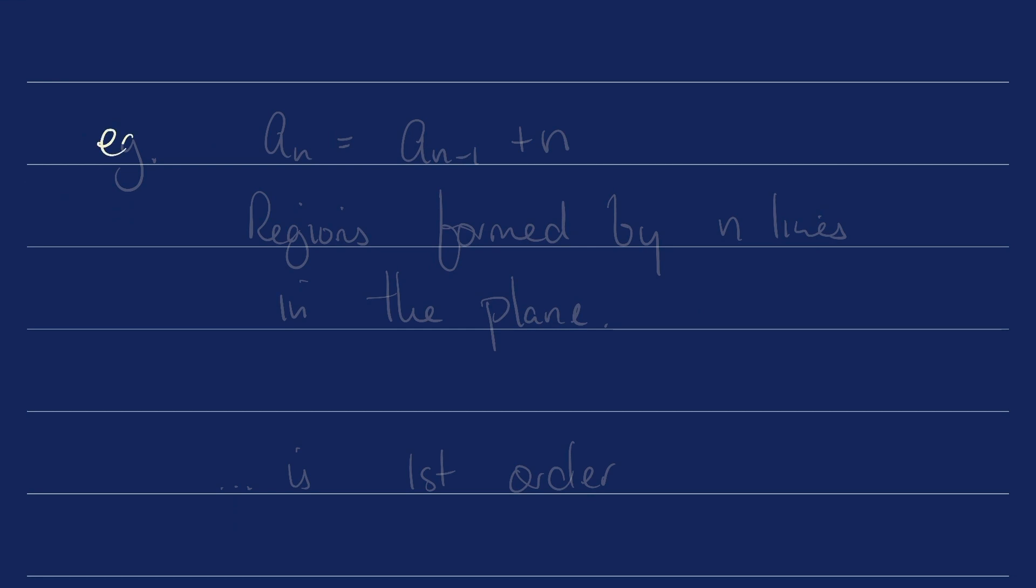Example. a_n = a_(n-1) + n. This is the recurrence relation defined by the number of regions formed by n lines in the plane. And this is going to be first order. a_n does not depend on any terms in the sequence except the (n-1)st term.